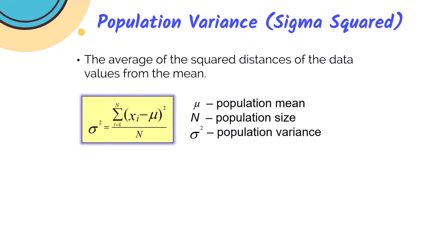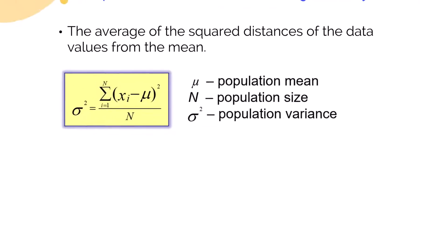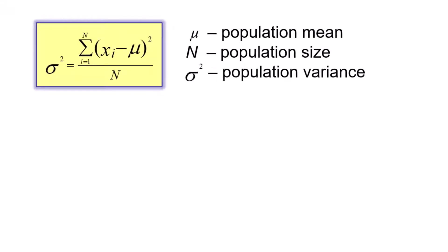The population variance is the average of the squared distances of our data values from the mean. Here is our formula using different Greek letters. So let's review what each of these symbols represent. Mu (μ) is our population mean. Big N tells us our population size. And then sigma squared (σ²) is our population variance.